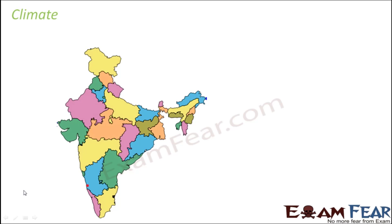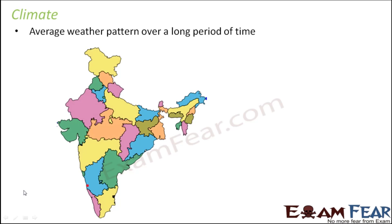When we use the word weather, we are talking about day-to-day changes in atmospheric conditions. When we use the word climate, we are talking about the overall atmospheric conditions of a place based on observations over a large number of years. Climate can be defined as the average weather pattern over a long period of time. For example, when we say Jammu and Kashmir has a cold climate, that means if you look at the average weather pattern of Jammu and Kashmir, most of the time it is cold.